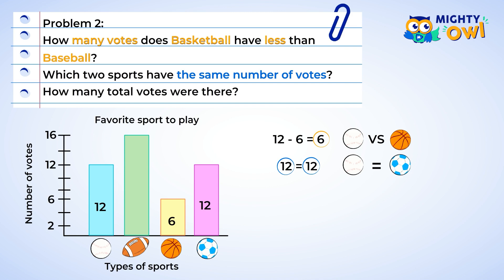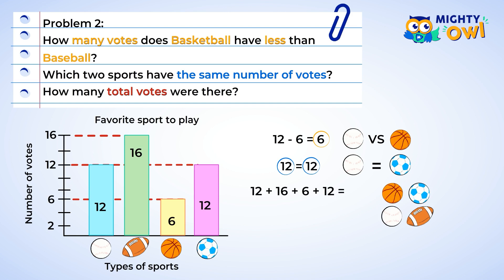Last question: how many votes were there in total? We already know that there were 12 votes for baseball, 6 for basketball, and 12 for soccer. We haven't yet found the number for football, so let's count it. That gives us 16 votes for football. When we see the phrase 'the total number,' that means to add up all the votes. So 12 plus 16 plus 6 plus 12. Let's do this one part at a time: 12 plus 16 equals 28, 28 plus 6 is 34, and 34 plus 12 is 46. There were a total of 46 votes.